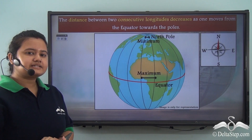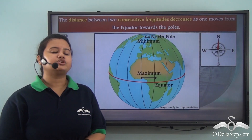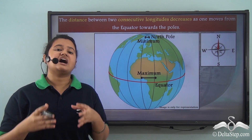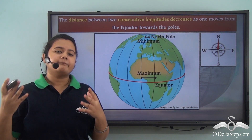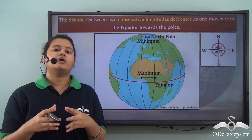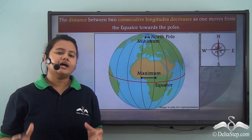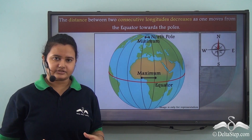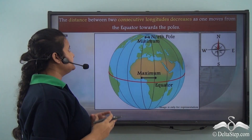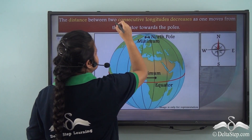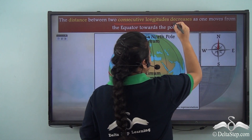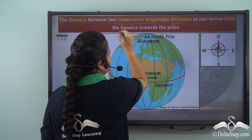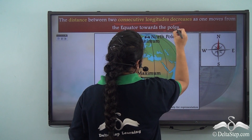Now, unlike latitudes, the longitudes are not equidistant. The distance between two consecutive longitudes decreases as one moves from the equator towards the poles.